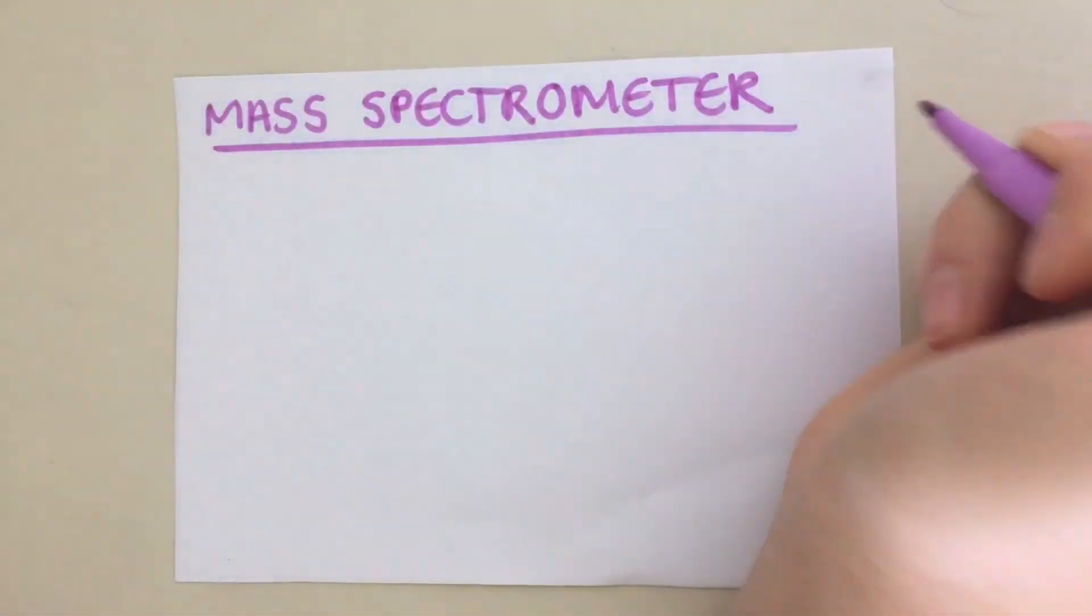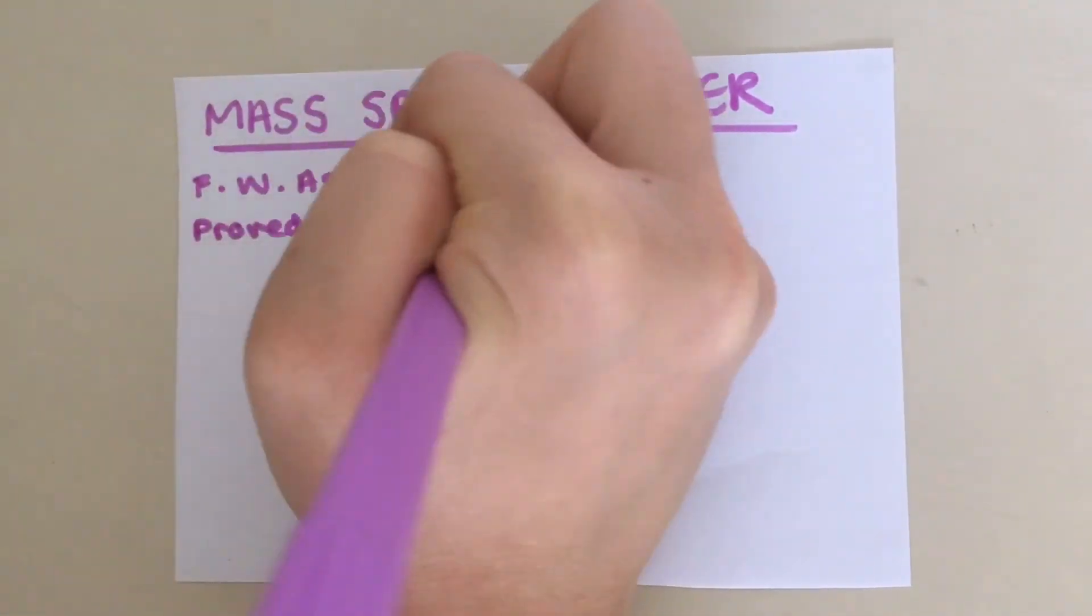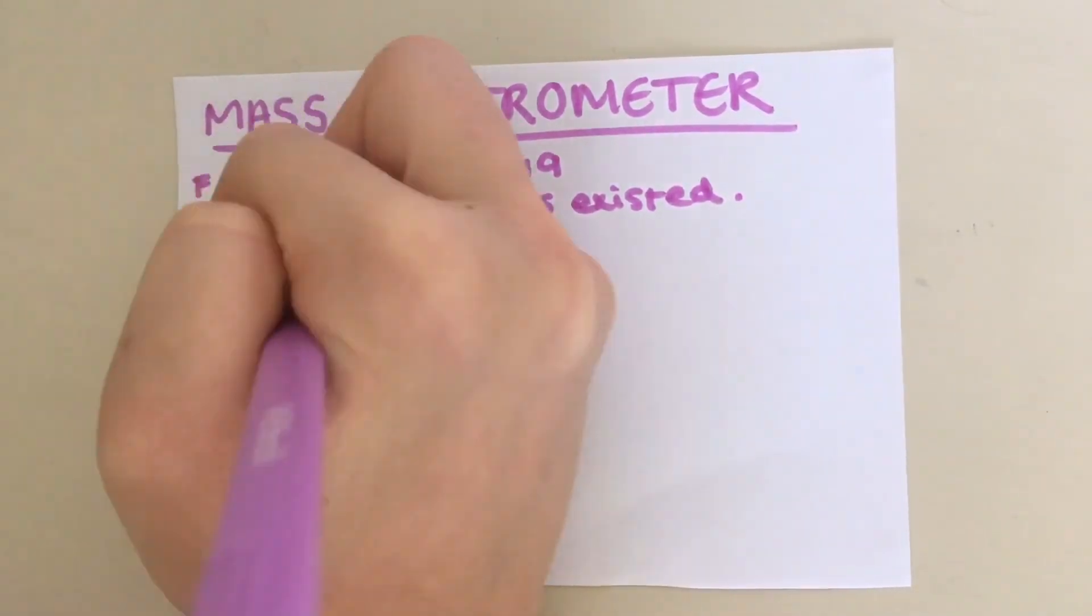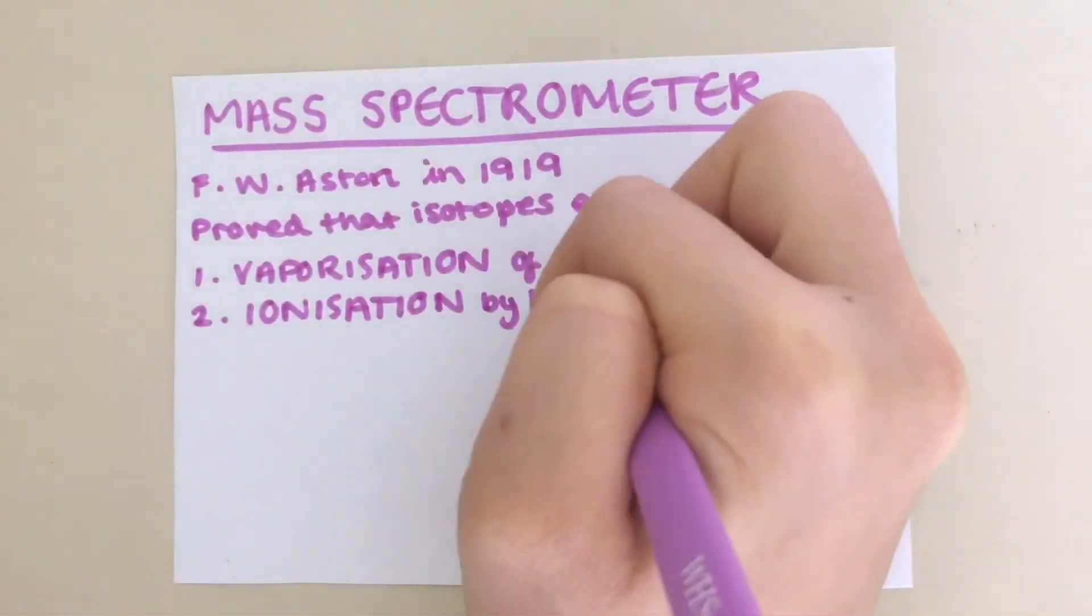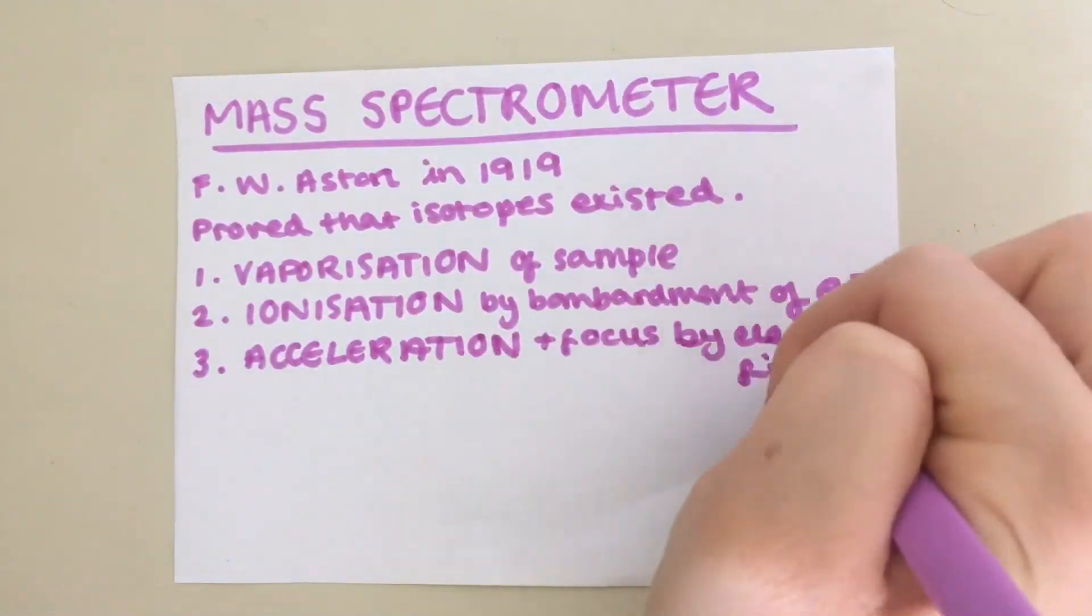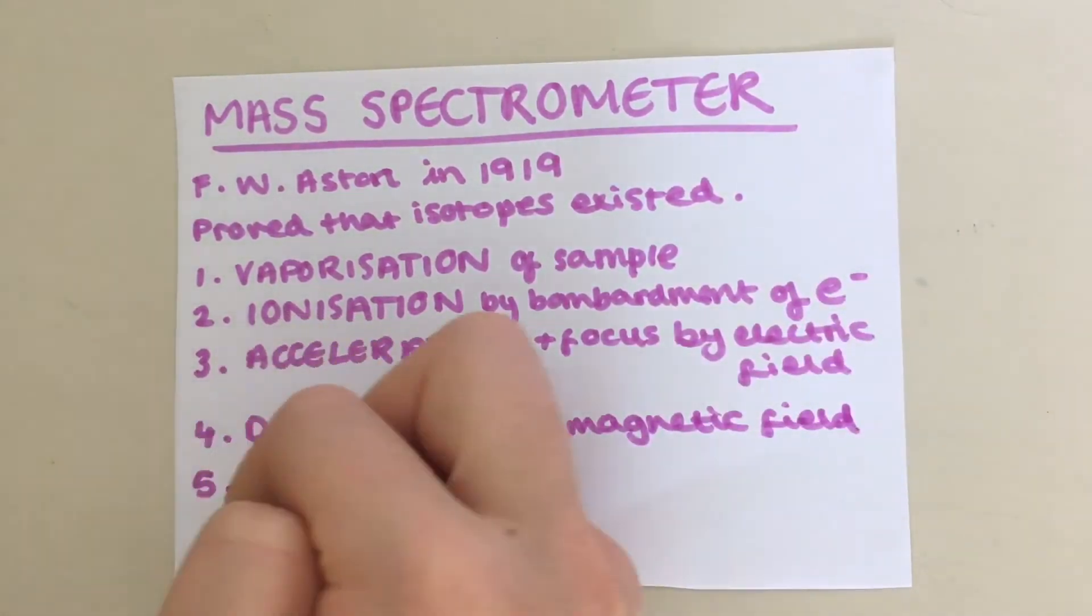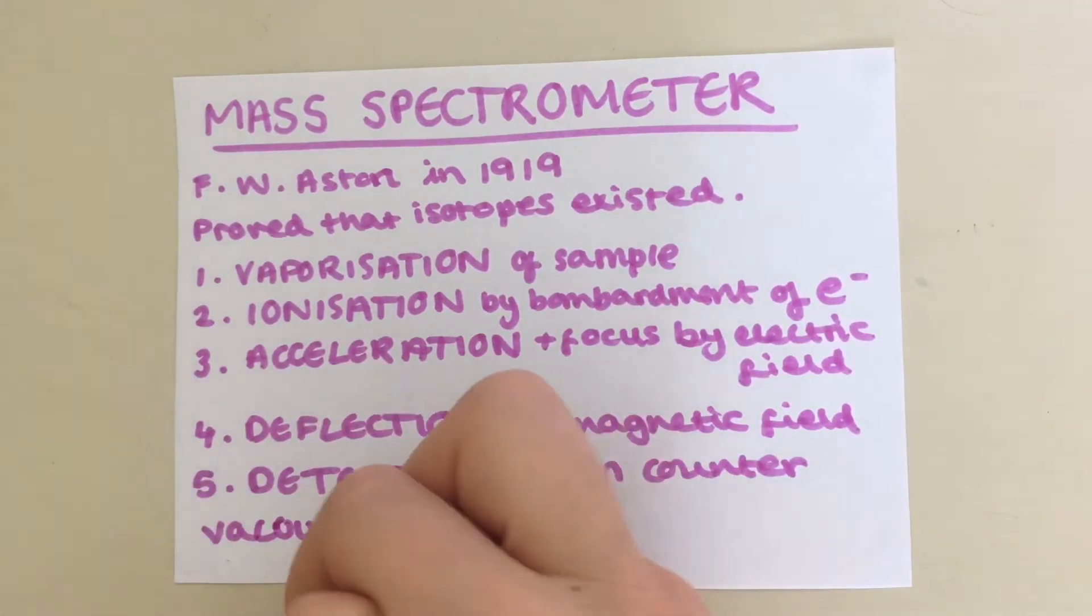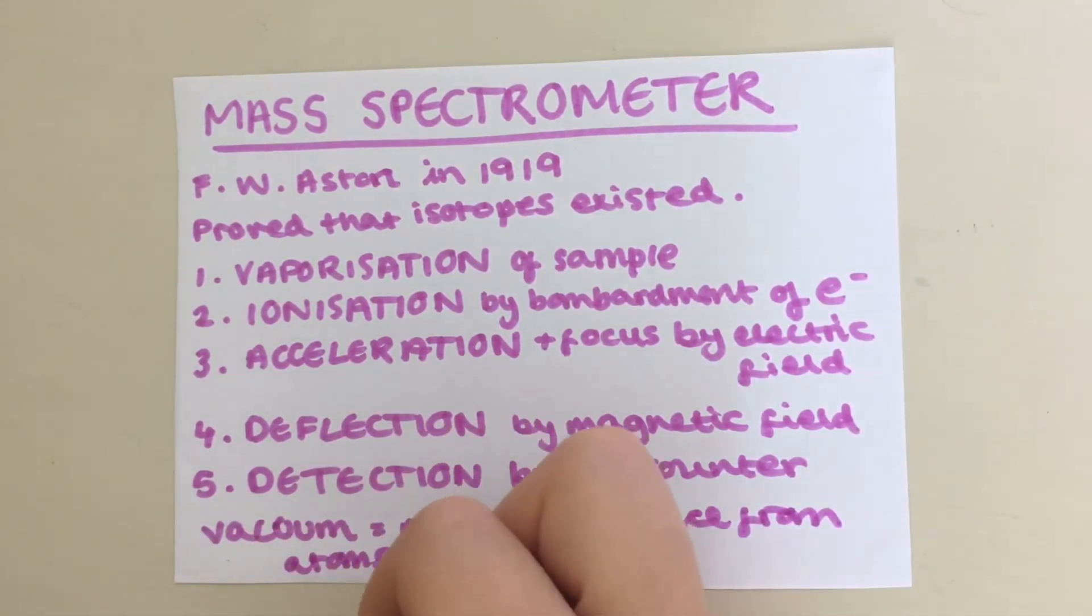A mass spectrometer is an instrument invented by FW Aston in 1919. It proved for the first time that isotopes existed. Firstly, the sample is vaporized. Then, it is ionized by bombardment of electrons with an electron gun. After that, it is accelerated and focused by an electric field. Then, it is deflected by a magnetic field. And finally, it is detected by an ion counter. All of this is done inside a vacuum so that the ionized atoms or molecules can be studied without interference from atoms or molecules in the air.